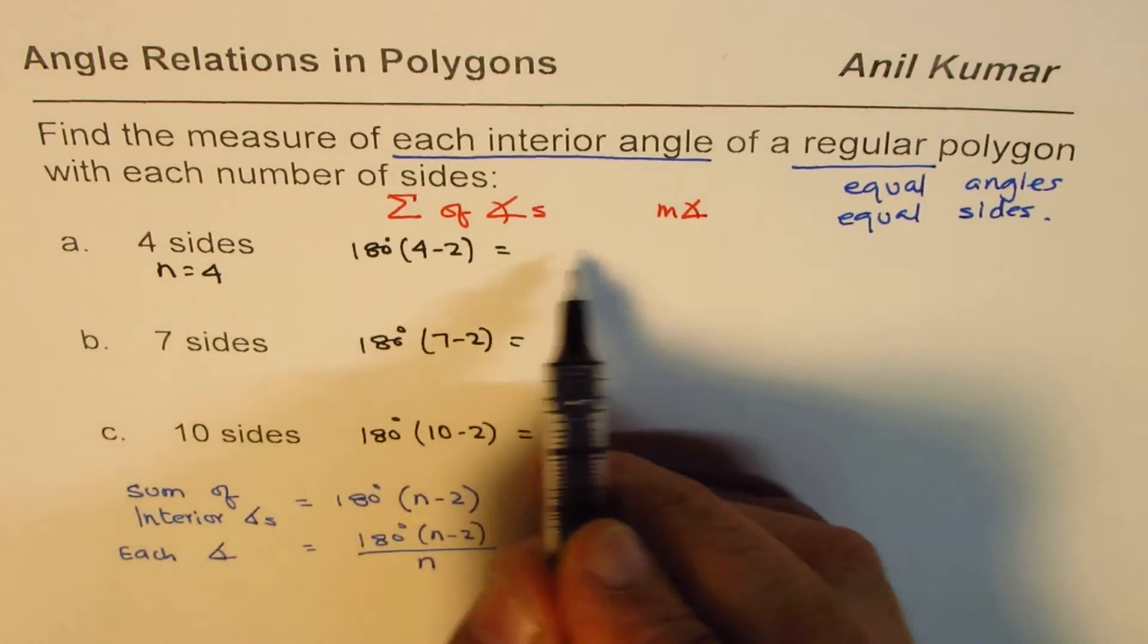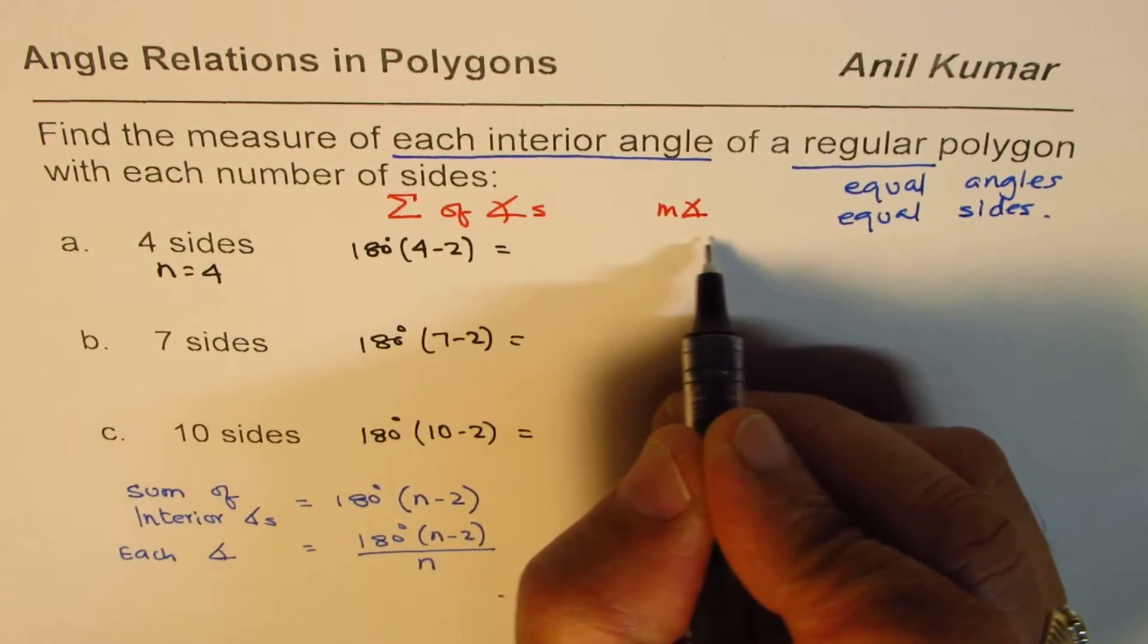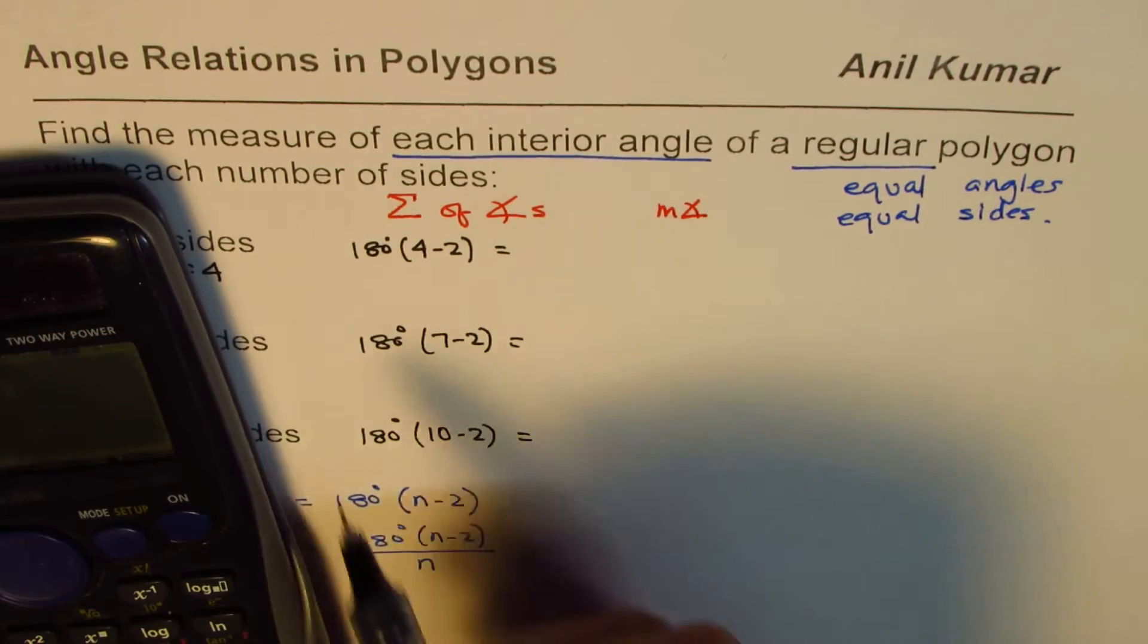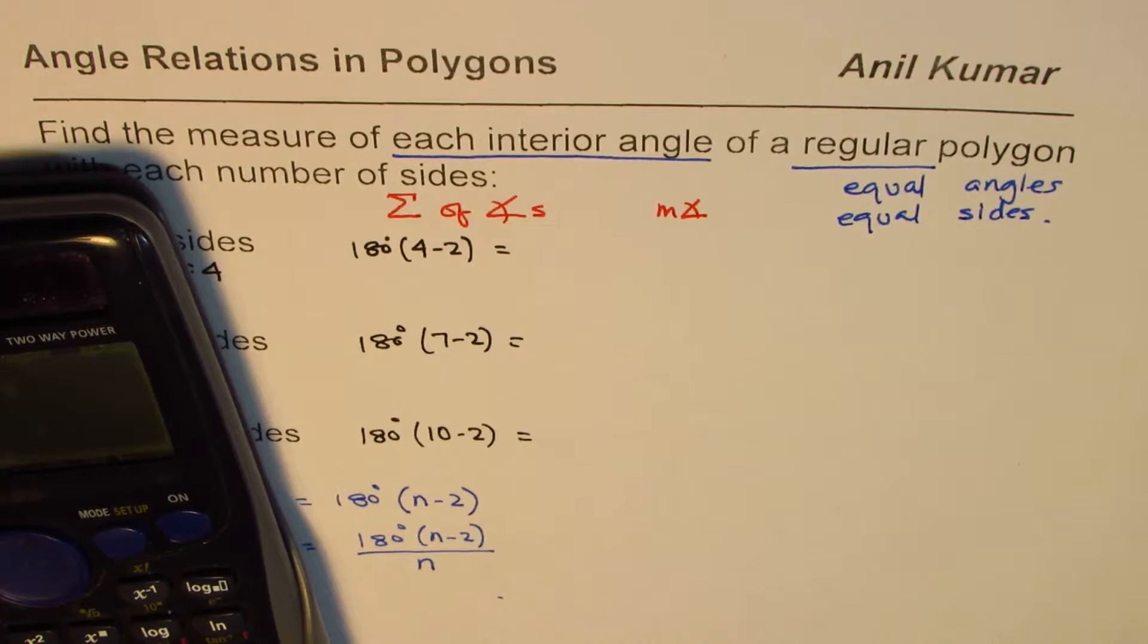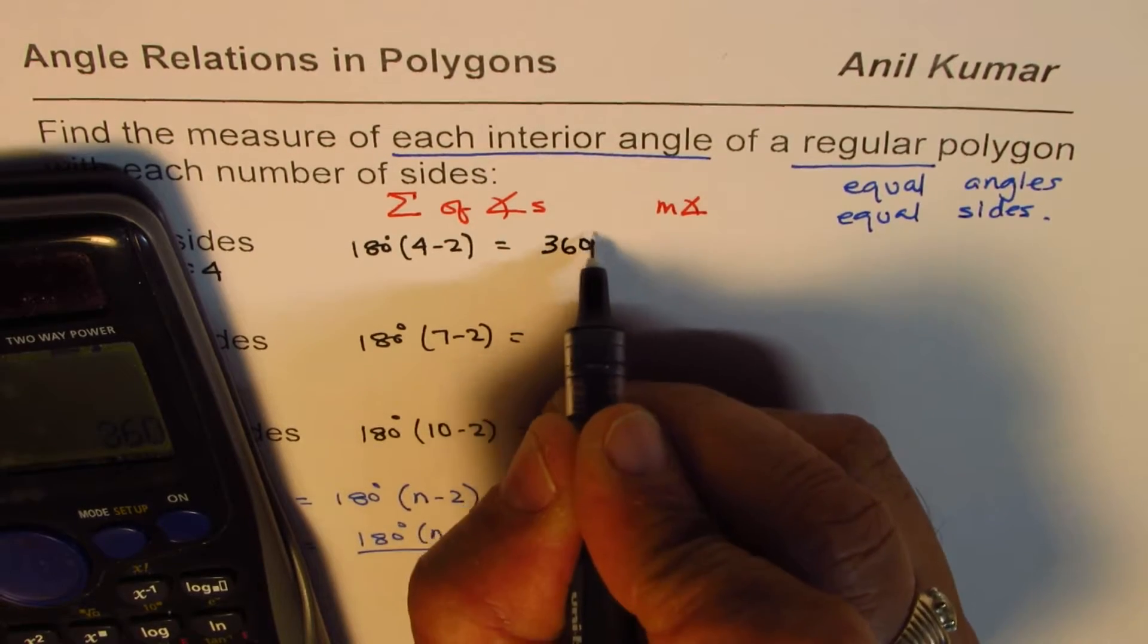So, this you can find by dividing by 4. In this case, let's calculate this part. 180 times 4 minus 2 is 2. So, 180 times 2 equals to 360 degrees, so this is 360 degrees.